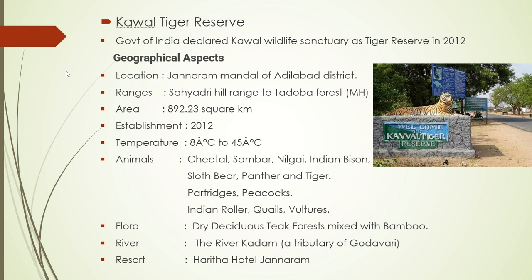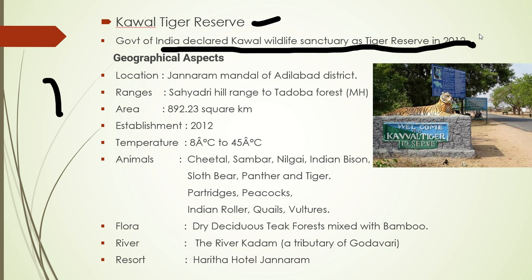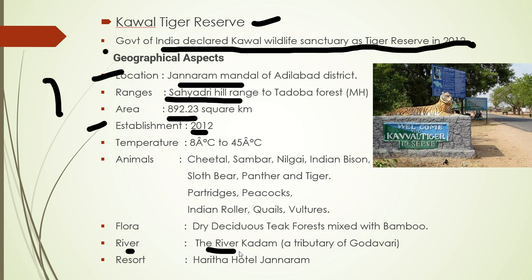The second tiger reserve is Kawal Tiger Reserve. The Government of India declared Kawal Wildlife Sanctuary as a tiger reserve in 2012 — a very important point. It is located in Jennaram Mandal of Adilabad district. Key details for exams: the Sahyadri Hill Range is present; its area is 892.23 square kilometers; established in 2012; river — Kadim River; forest type — dry deciduous teak forest mixed with bamboo. Along with tigers, cheetah, sambar, nilgai, and Indian bison are also protected here.